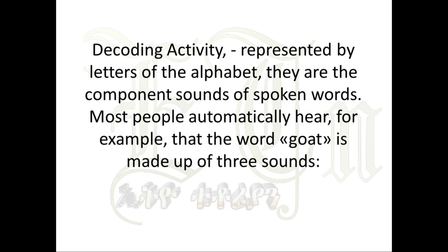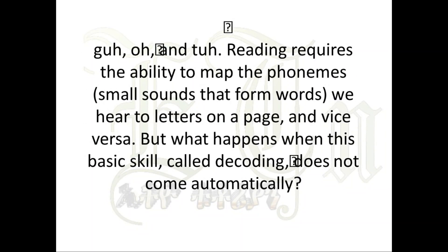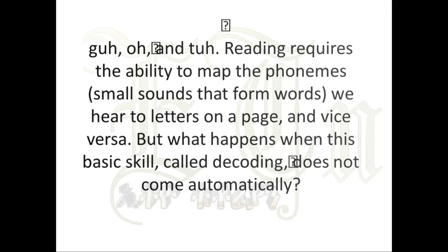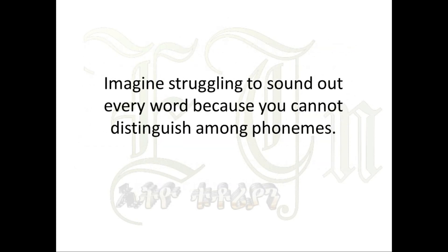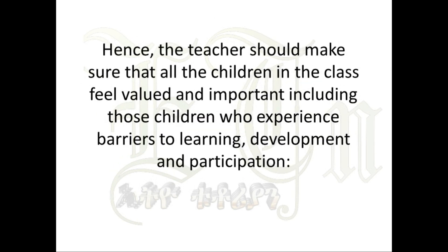Decoding — represented by letters of the alphabet — refers to the component sounds of spoken words. Most people automatically hear that the word 'goat' is made up of three sounds: 'g', 'o', and 't'. Reading requires the ability to map phonemes — the small sounds that form words we hear — to letters on a page and vice versa. But when this basic skill called decoding does not come automatically, imagine struggling to sound out every word because you cannot distinguish among phonemes.